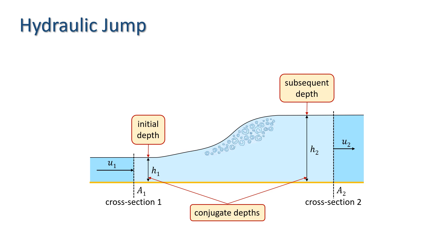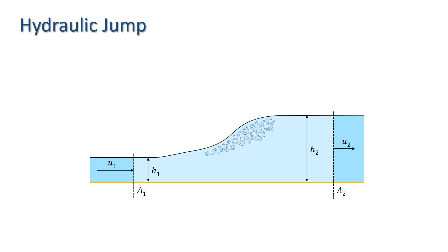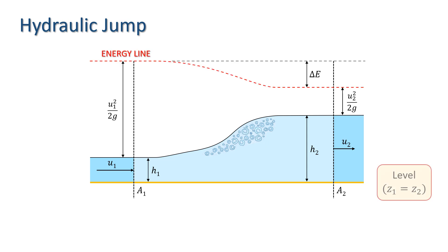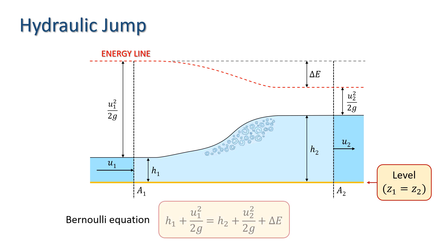We'll use the continuity and momentum equations to find the relationship between the conjugate depths. We've already noted that there's a loss of energy across the jump, and we can use the Bernoulli equation to evaluate the magnitude of the energy loss. We have an energy diagram assuming no change in elevation across the jump, and remembering that for open channel flow the pressure head term in the Bernoulli equation is simply the water depth. We have the equation: H1 plus U1 squared over 2g equals H2 plus U2 squared over 2g plus delta E, where delta E is the energy loss in the jump.